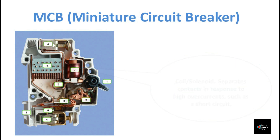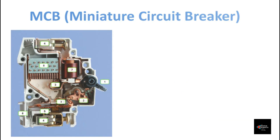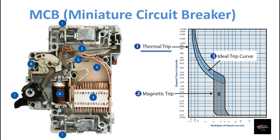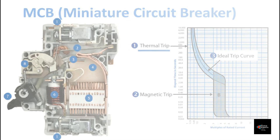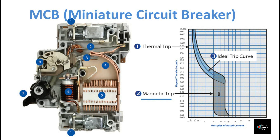The arc divider and extinguisher breaks the main arc into smaller arcs and extinguishes them. During overcurrent, the MCB trips due to the heating and deforming action of the bimetallic strip — so this is called a thermal trip. During short circuit, the MCB trips due to the magnetizing action of the solenoid coil — so this is called a magnetic trip.